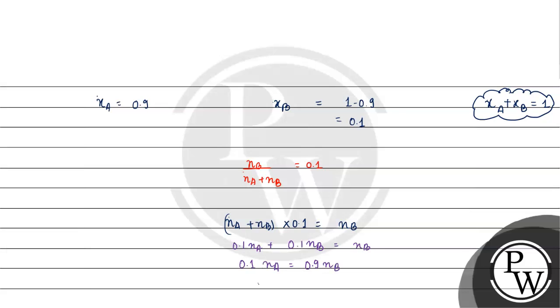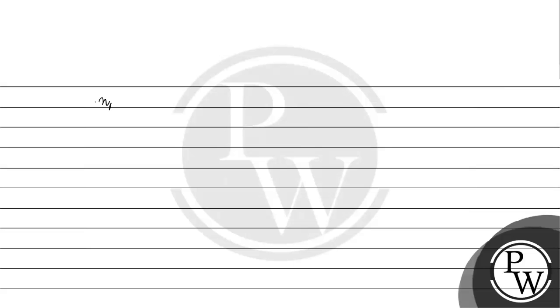Now, N_A by N_B — how much will it come to? 9. Now, the number of moles of A equals mass of A divided by its molecular mass, which is given as 200 amu. Since 1 amu is basically equal to 1 gram per mole, 200 amu becomes 200 gram per mole.